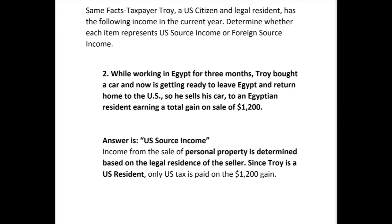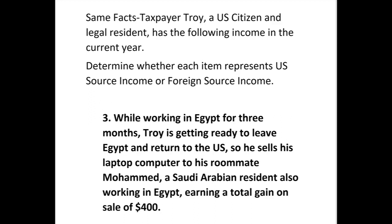So what we've learned: while Troy earned wages in Egypt, that was foreign source income because earned income is taxed based on where it's earned. But if he sells his car there, the gain on the sale of personal property is determined based on the legal residence of the seller. Troy is a US resident, so he pays only US tax on that gain. When it comes to the sale of personal property, look to the legal residence of the seller.